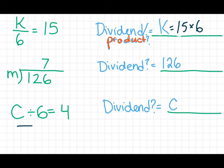In the bottom problem, again, these two problems, the dividend is the one that's unknown. So all I have to do is multiply my two known numbers to get the unknown number.